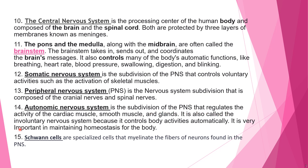Number fourteen: the autonomic nervous system is a subdivision of the PNS that regulates the activity of cardiac muscle, smooth muscle, and glands. It is also called the involuntary nervous system because it controls body activities automatically and is very important in maintaining homeostasis. Cardiac muscles and glands function involuntarily — you can't stop them.